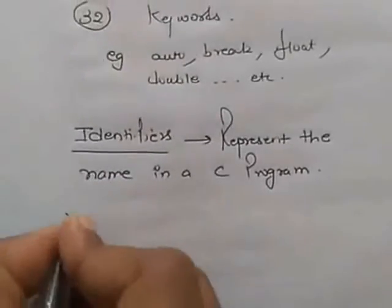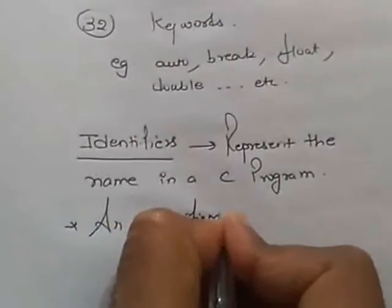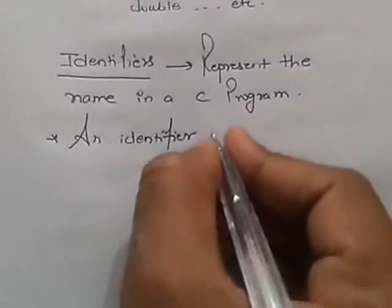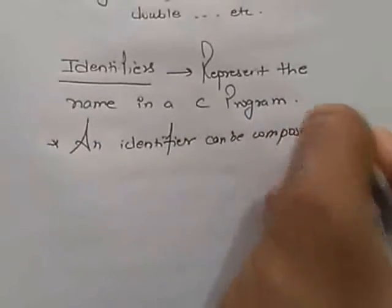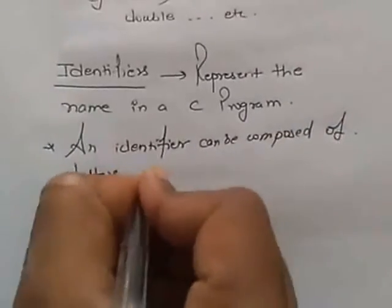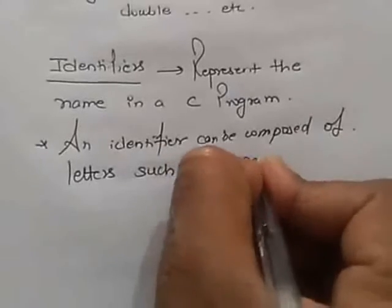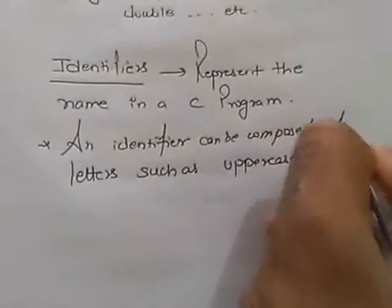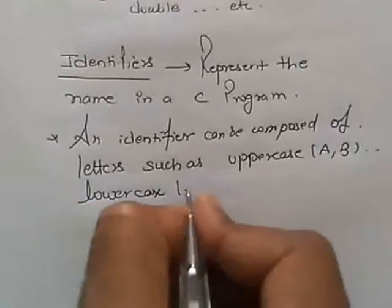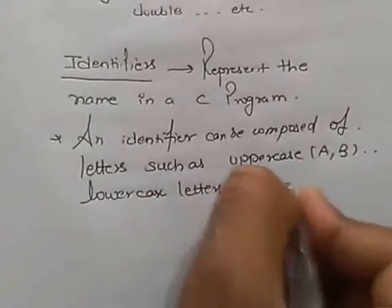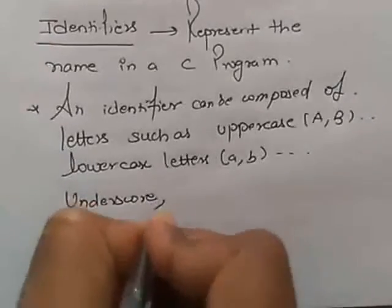An identifier can be composed of letters such as uppercase, for example capital A, B, etc., lowercase letters, underscore, digits.